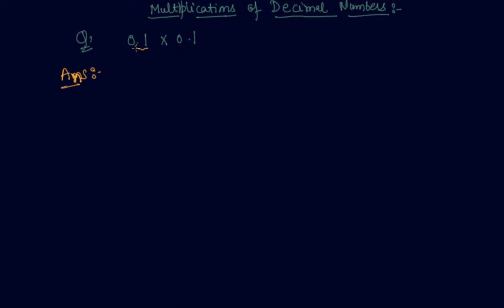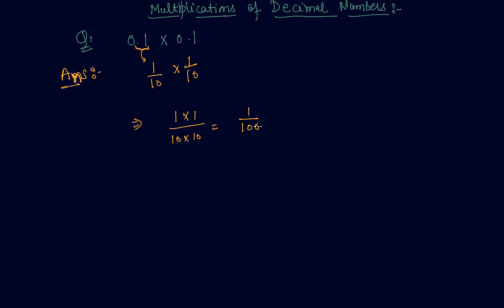First I will convert this decimal number into fraction. So I can write directly this as 1 by 10. If you have any doubt about how to convert a decimal number into a fraction, you can watch my previous lecture video. So I will convert the other decimal number again into fraction. Now I know how to multiply two fractions very easily. I will multiply the numerator part separately and the denominator part separately. This comes out to be 1 by 100.